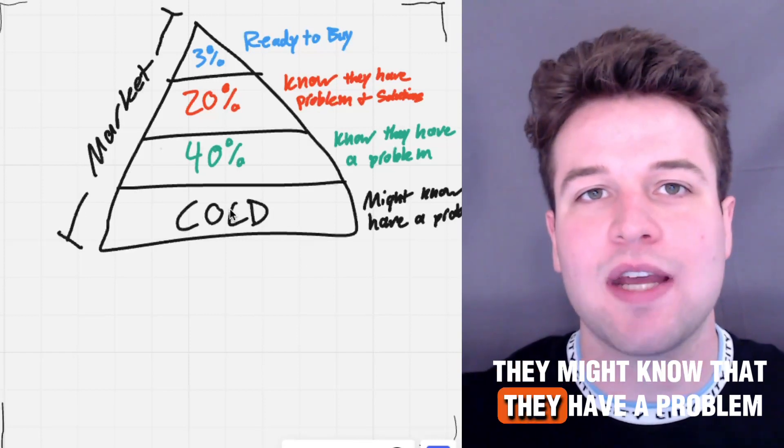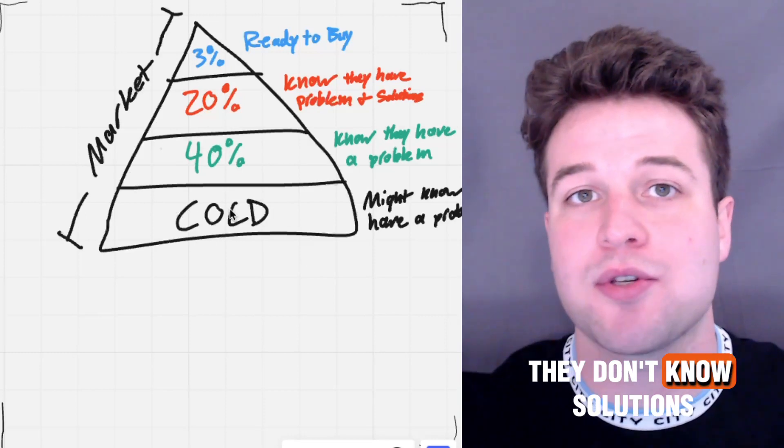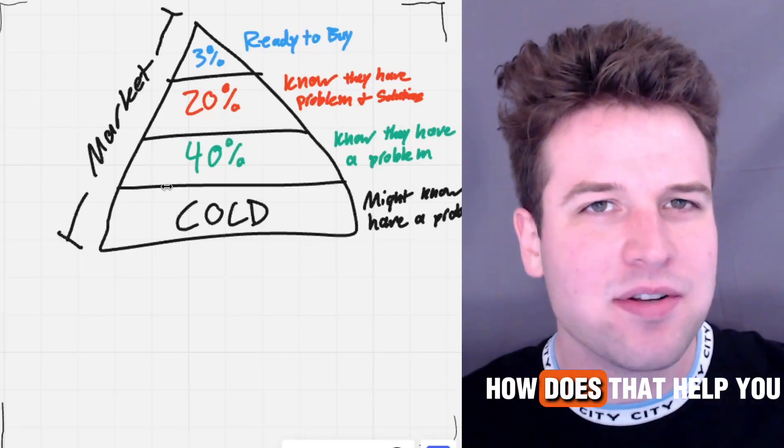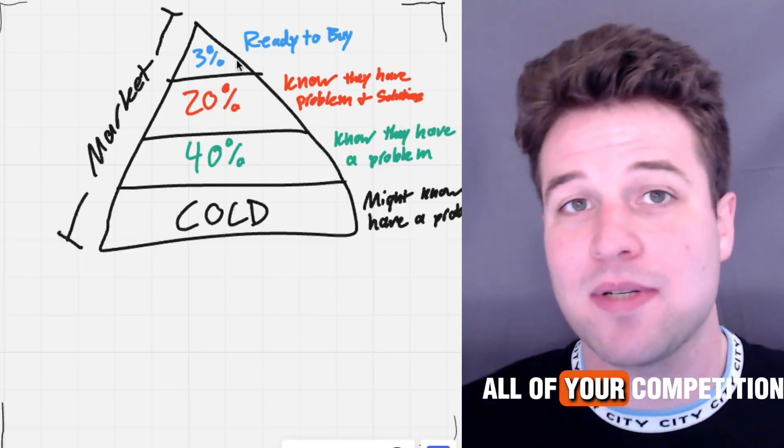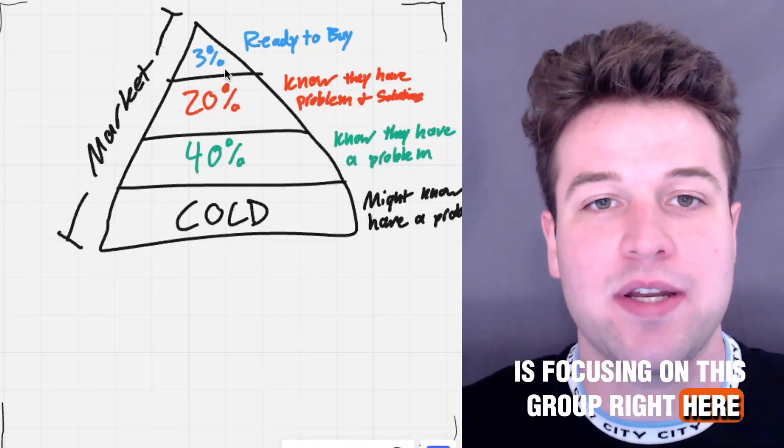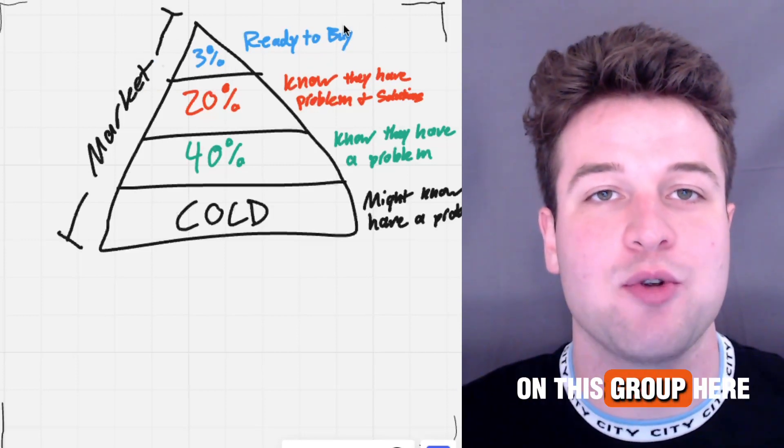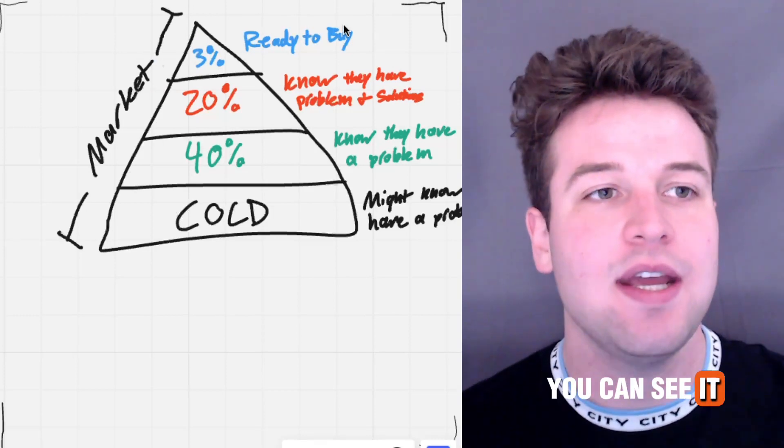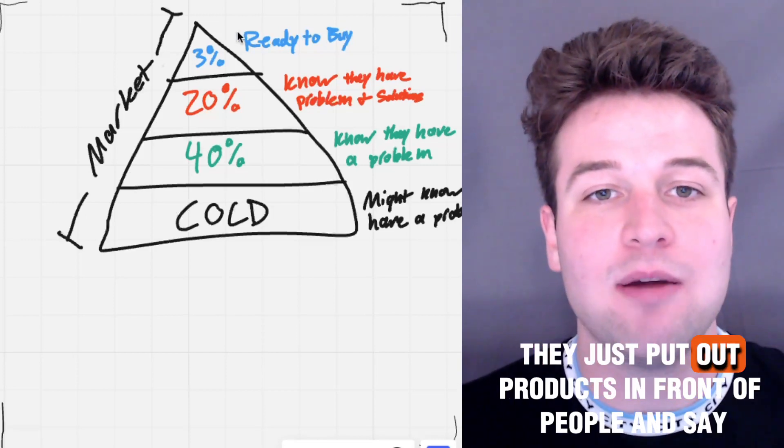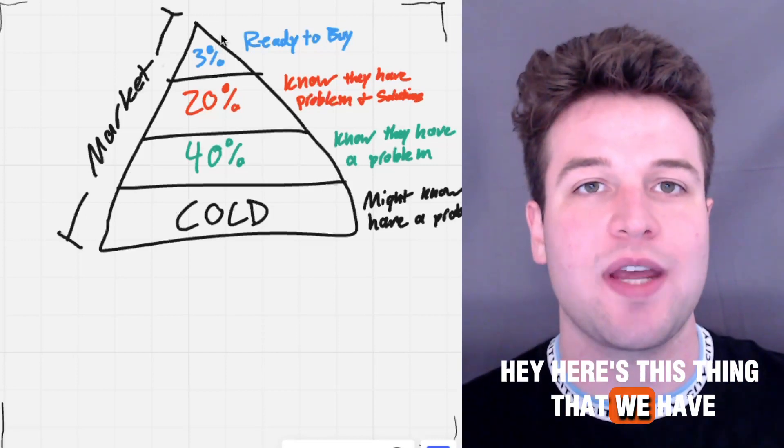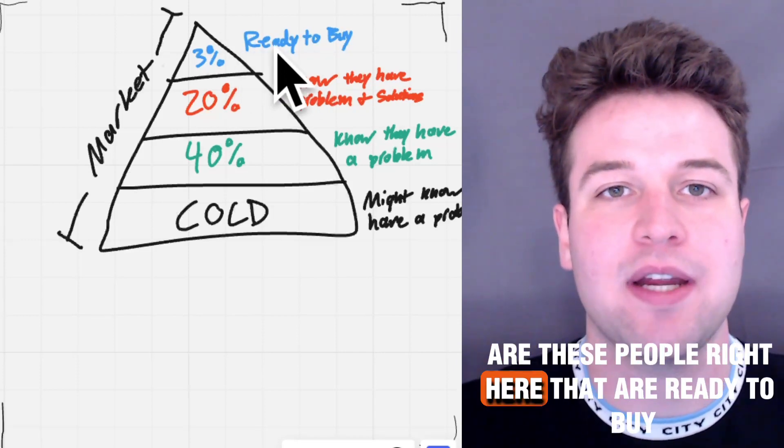Then the people down here, they might know that they have a problem, but they've got a ton of other stuff that they got to deal with. They aren't even looking for solutions. They don't know solutions exist. But still, how does that help you? Well, because most people just focus on this group here. All of your competition is focusing on this group right here. If you're in e-commerce, I can confidently tell you your competition is focusing on this group here. And you can see it in the advertisements. You can see it in the landing pages. You can see it in their marketing as a process because they just put out products in front of people and say, hey, here's this thing that we have. Come check it out. And the only people that click on this are these people right here that are ready to buy.